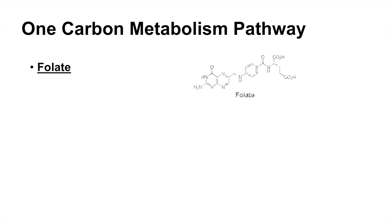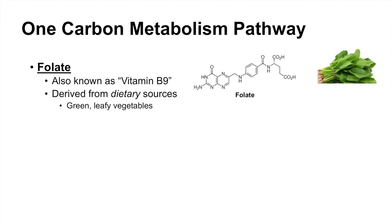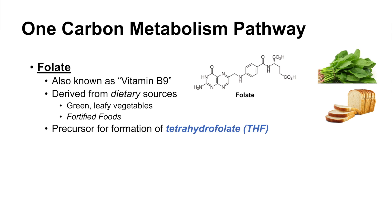To begin, we start with folate. Folate is also known as vitamin B9. We get folate from our diet, derived from dietary sources including green and leafy vegetables and also in fortified foods. Fortified foods are when we artificially supplement foods with folic acid, which is a synthetic form of folate. Fortified foods include breads and other grains. Folate is important because it is a precursor for the formation of tetrahydrofolate, or THF.